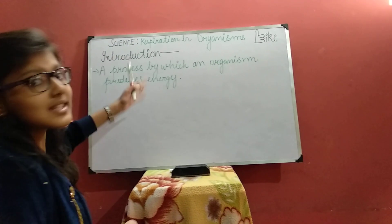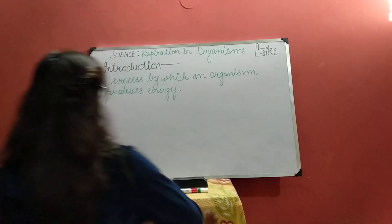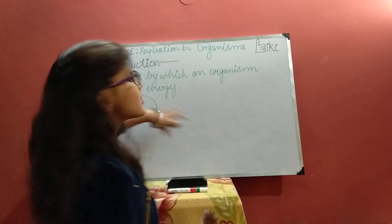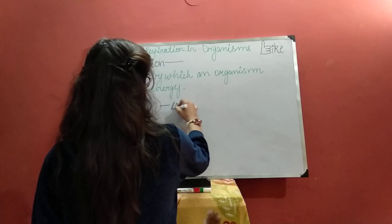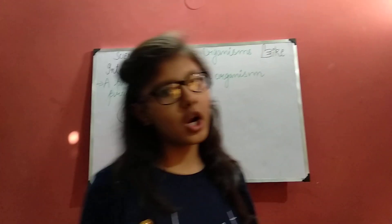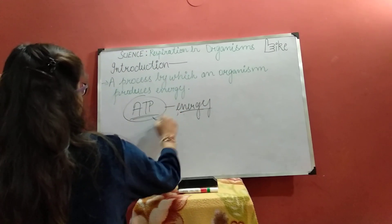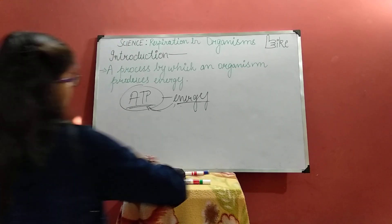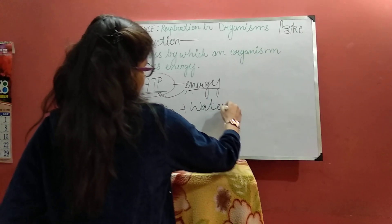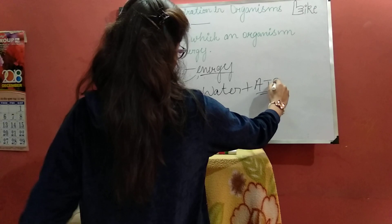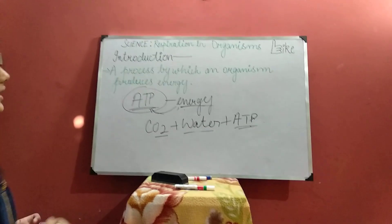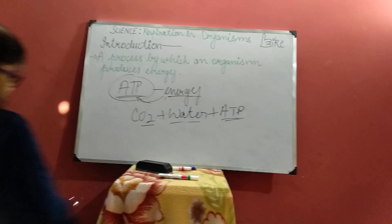Respiration is a process by which an organism produces energy. In this process, the energy is released in a currency called ATP. ATP is an energy currency — like we use rupees and dollars for exchanging and buying goods, same way we use ATP as our energy currency for the body. In this process, carbon dioxide is released along with water, plus ATP molecules. The number of ATP molecules varies depending on the type of respiration.